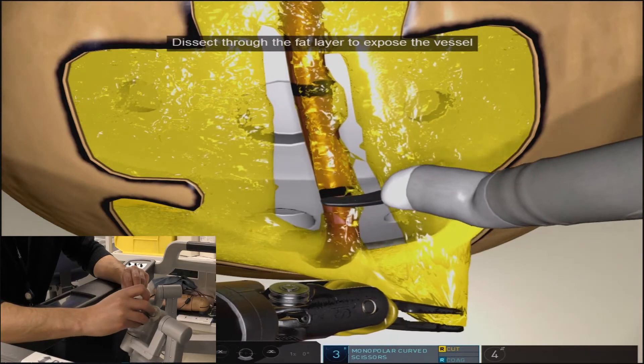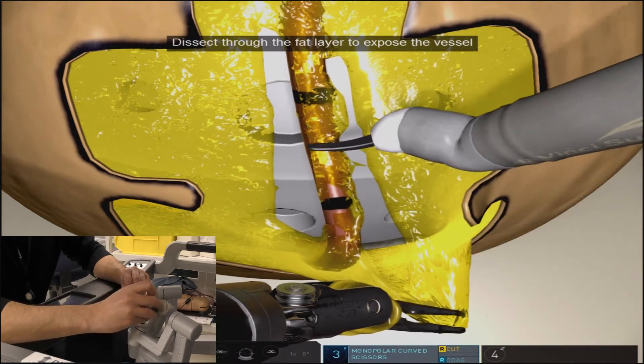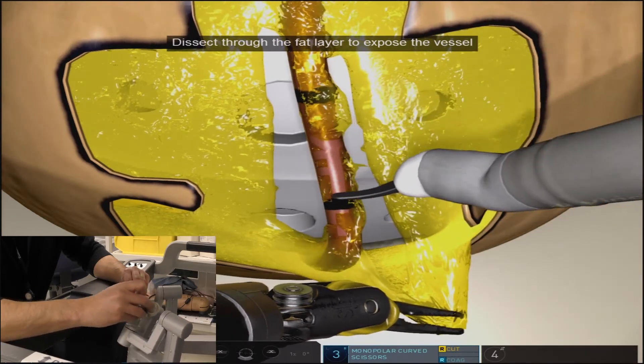You can see that at the top of the screen there is still a direction telling us to dissect through the fat layer to expose the vessel wall.